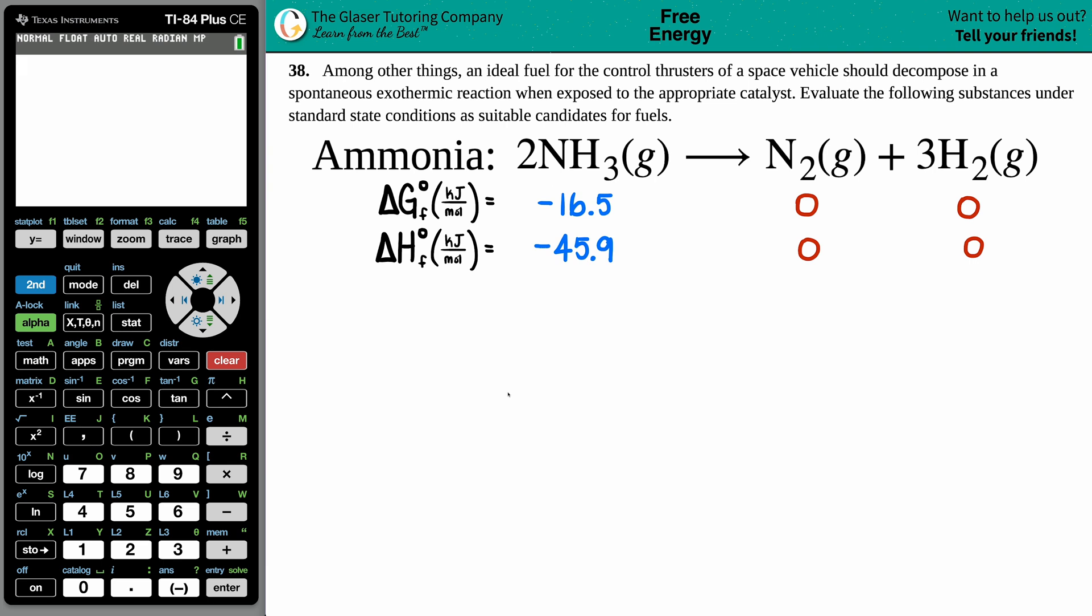Number 38: Among other things, an ideal fuel for the control thrusters of space vehicles should decompose in a spontaneous exothermic reaction when exposed to the appropriate catalyst. Evaluate the following substances under standard state conditions as suitable candidates for fuels. Can ammonia be used as a fuel for space vehicles? They give the breakdown of ammonia.